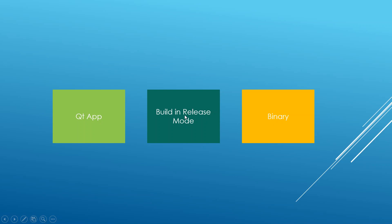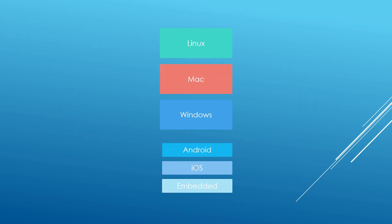To ship the application, we're going to build in release mode, which will give us a release binary we can send to our users. Once you have the binary, you have to do different things based on where you want to deploy — different steps for Linux, Mac, Windows, Android, iOS, and embedded platforms.